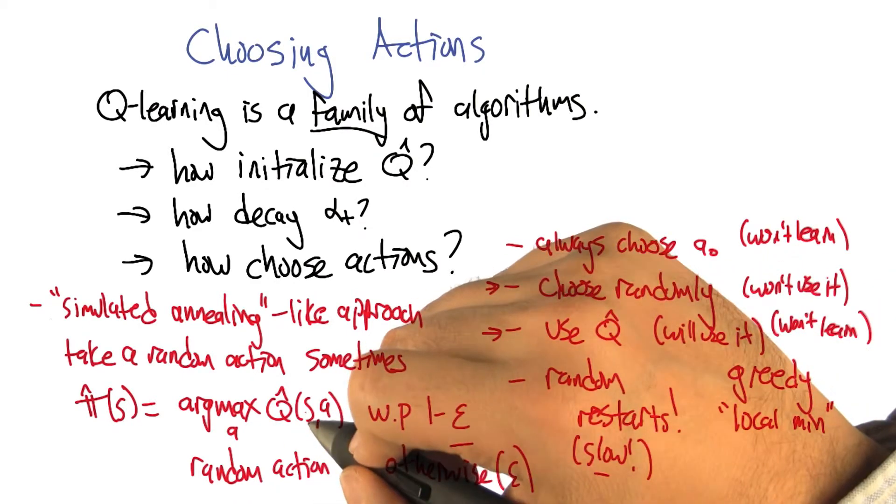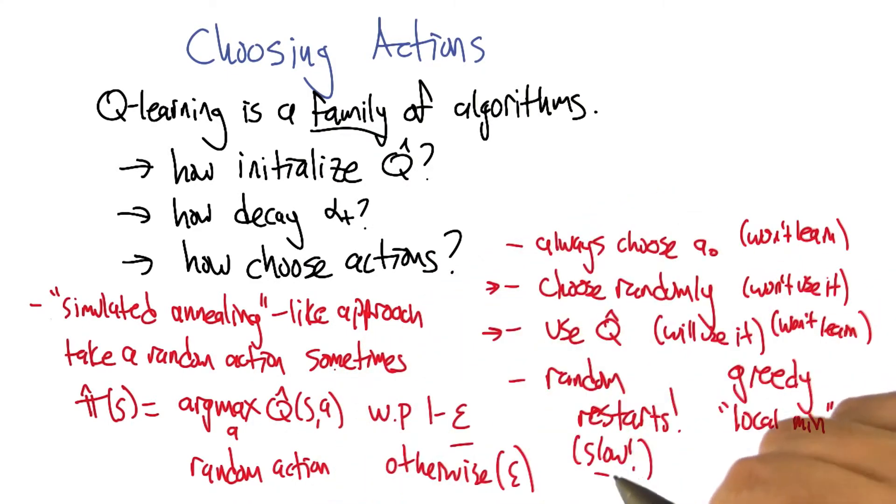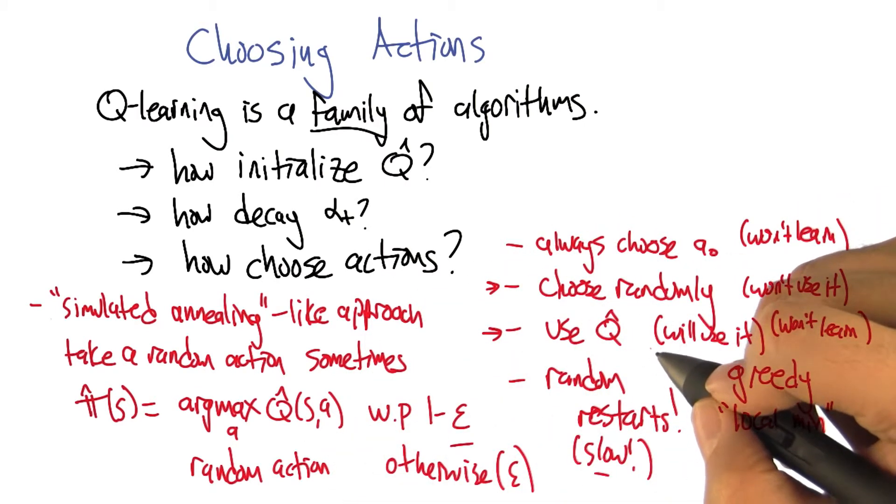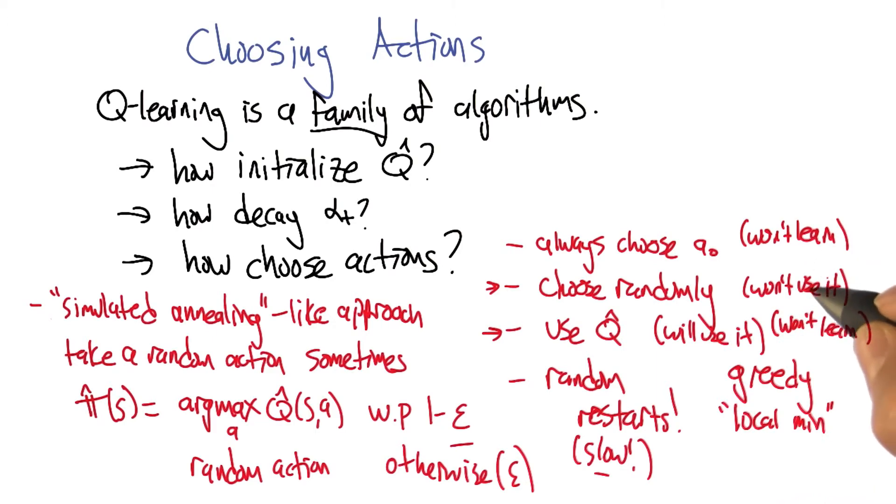Alright, so let's focus in on this a little bit more. Because I think this is now the first idea that we've had for choosing actions that has the property that it will learn, and it will use what it learns. Hmm, I like that.